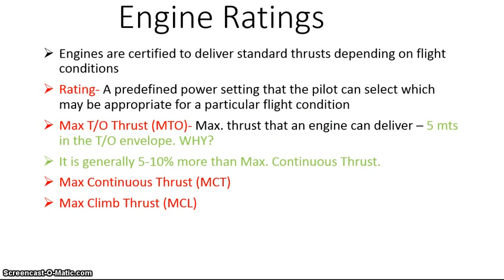Engines are certified to deliver standard thrust depending on flight conditions. Like, if you remember during your flying training, whenever you went to a climb mode there was a particular setting, or whenever you started leveling off there was a particular throttle setting, even for a descent. By every phase of flight there is a related or corresponding power setting. And that's the gist of the story. A rating is a predefined power setting that the pilot can select, which may be appropriate for a particular flight condition.